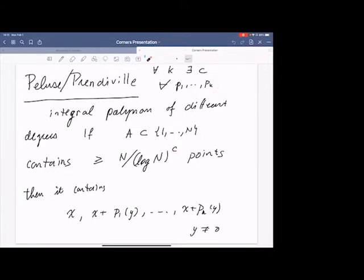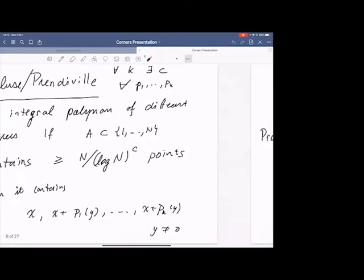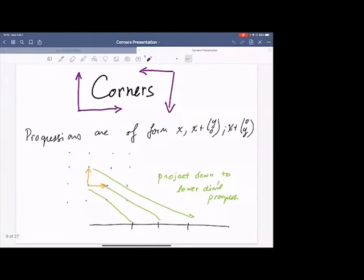These are polynomials that are integral in the sense, and by which I mean p of 0 is 0, and p of z is contained in z. So if you have integral polynomials of different degrees, if A again satisfies a logarithmic type density condition, then the set contains a polynomial progression. And of course, c here is allowed to be very small as a function of the polynomials. Again, this is a striking result because if you were to take not a polynomial progression but a four-term arithmetic progression, no result like this type is known. Yes, dense sets contain four-term arithmetic progressions, but there's no logarithmic type density condition known in this level of generality in the linear case.